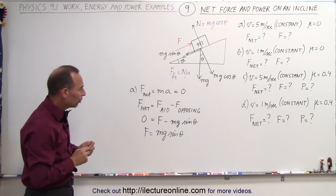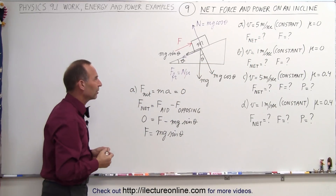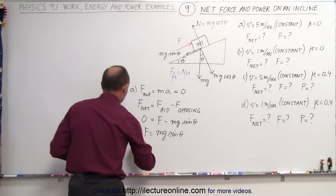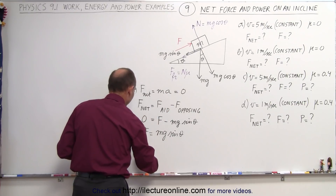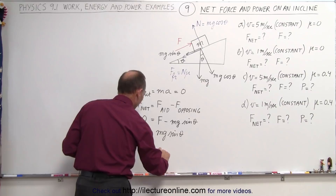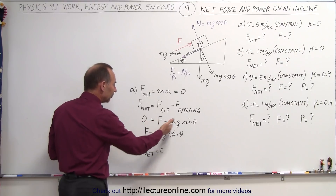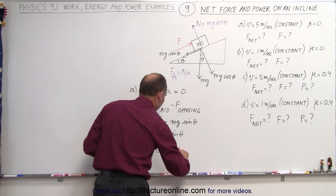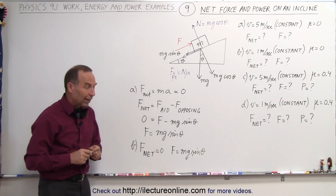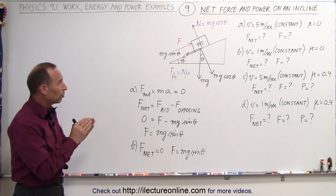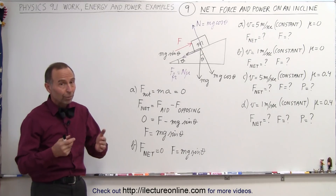What happens when we push the block up at a different speed — 1 meter per second instead of 5? Does that make any difference? For part B, the answer is no, it makes no difference. Again, there's no acceleration, so F net equals zero, and since there's no friction, F equals mg sinθ. It's strange but true that it requires the exact same force to push the block up at 5 meters per second versus 1 meter per second.